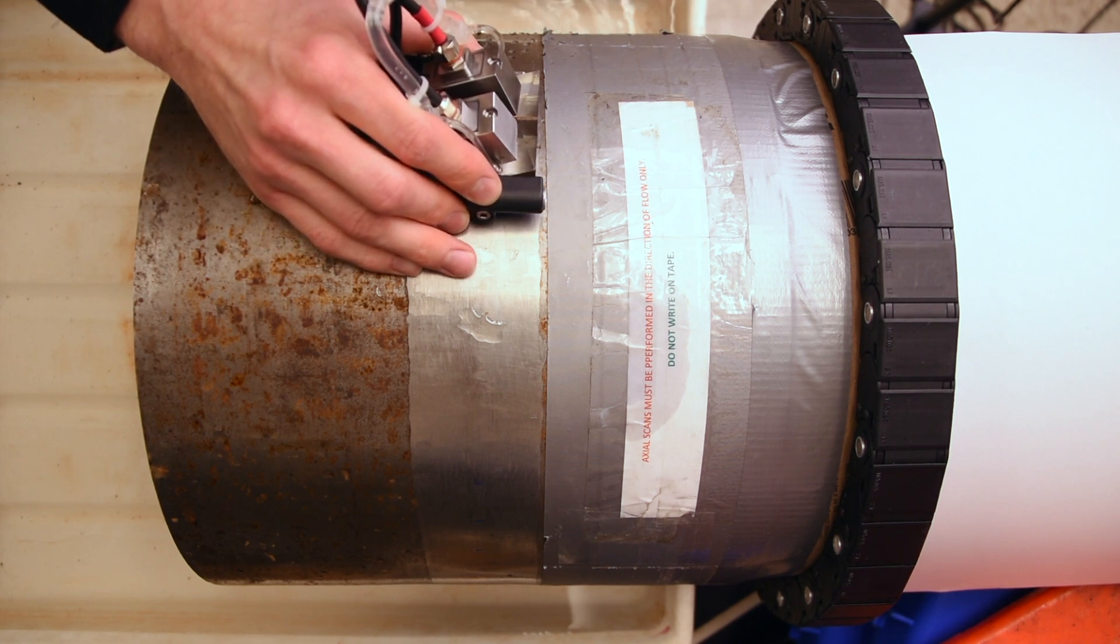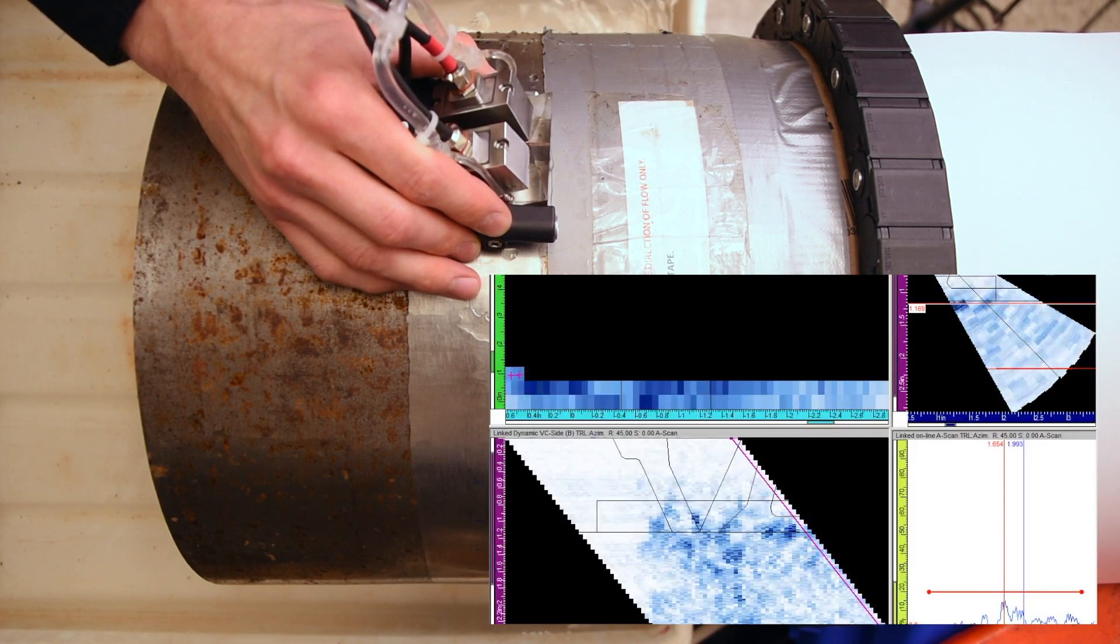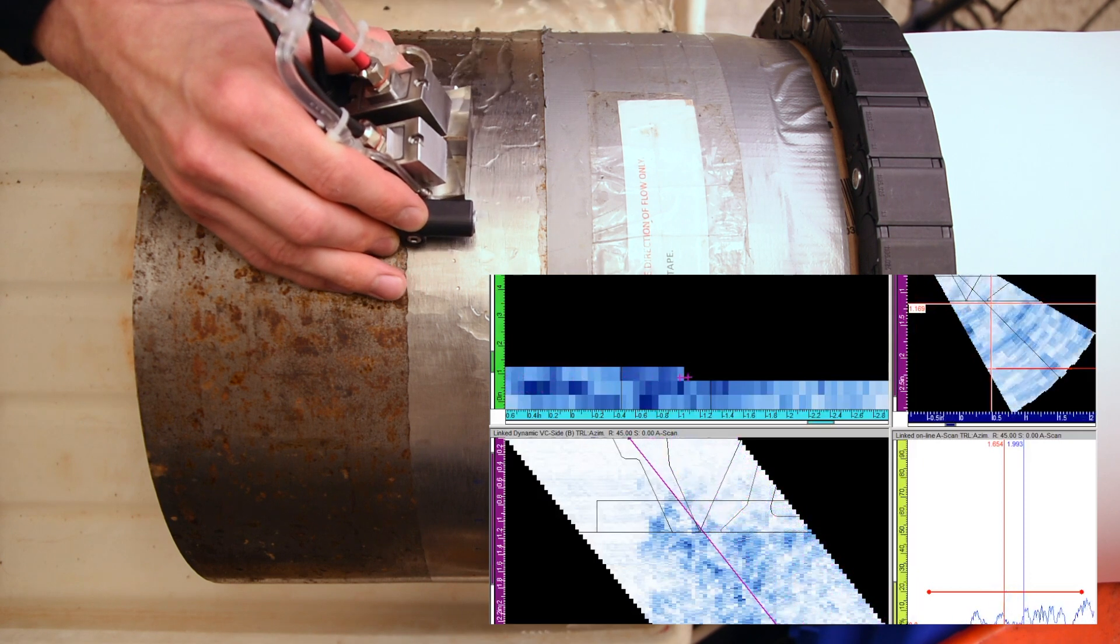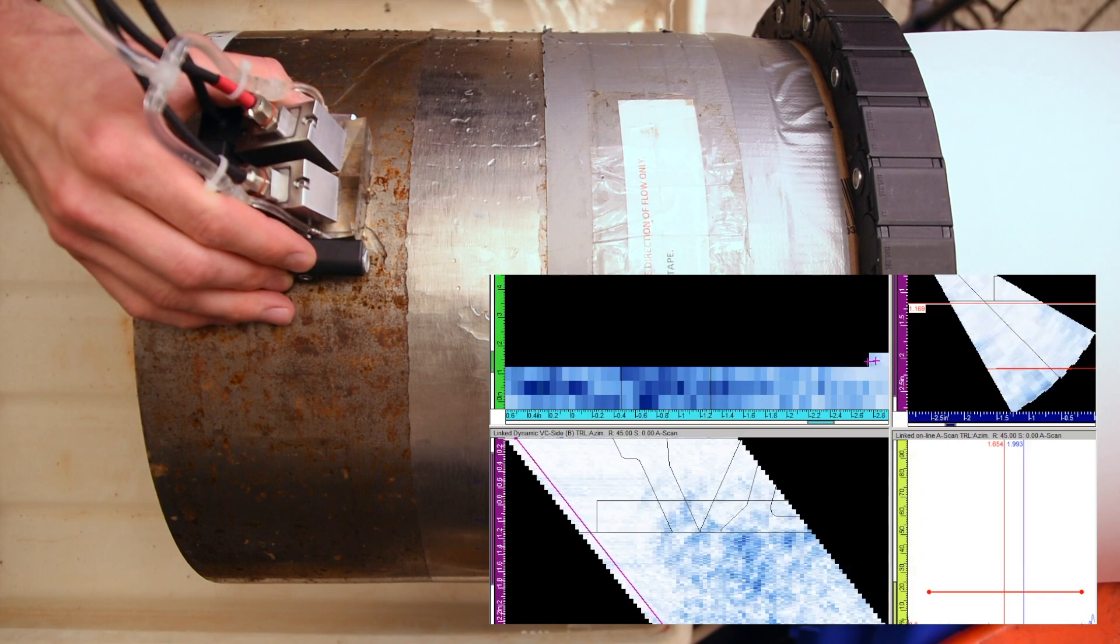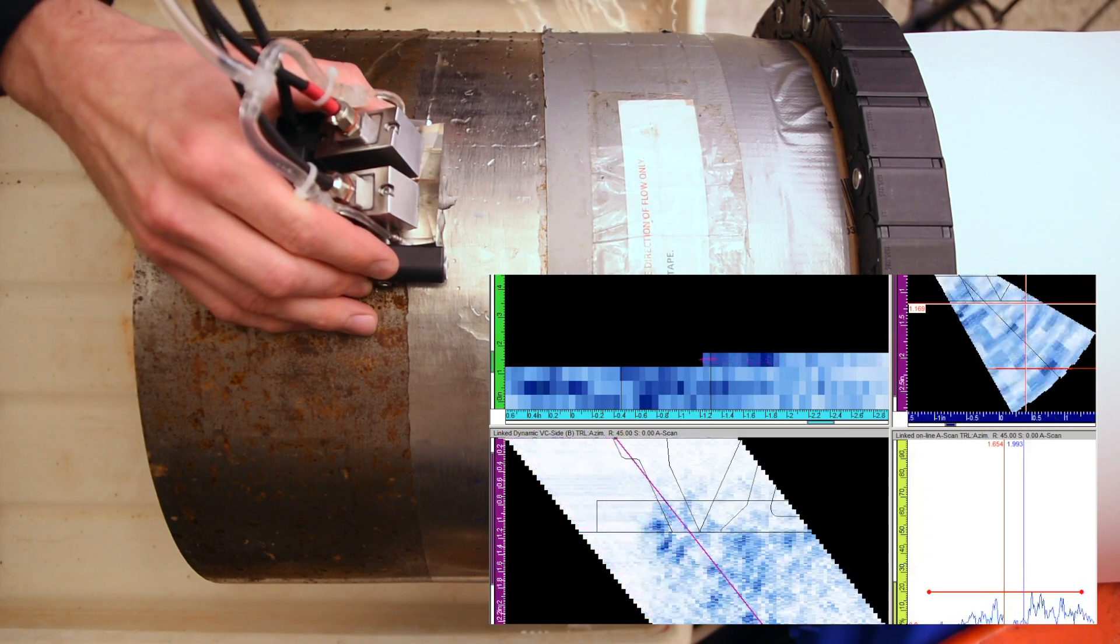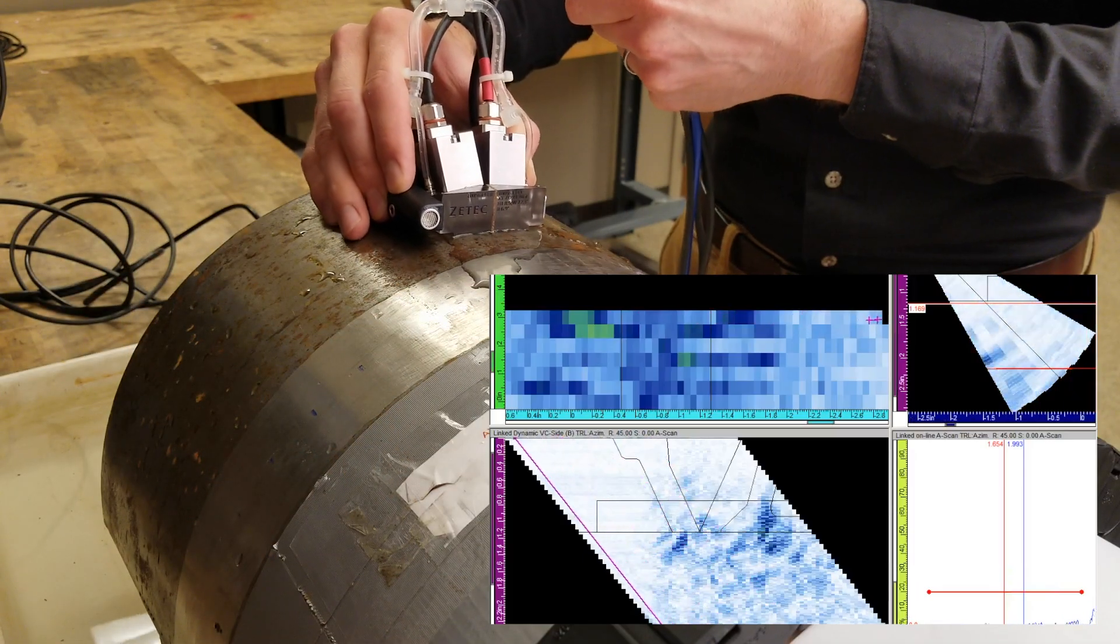Once the LATITUDE and phased array systems are connected, the component is ready to be scanned. As you can see, while the probe is being moved freely by hand, the phased array system is tracking and associating the acquired data with the physical location of the probe on the pipe.